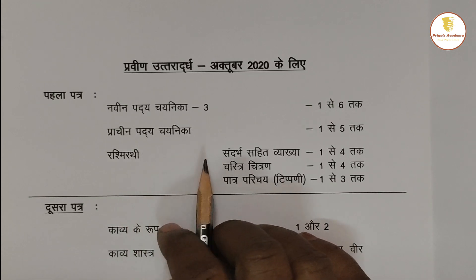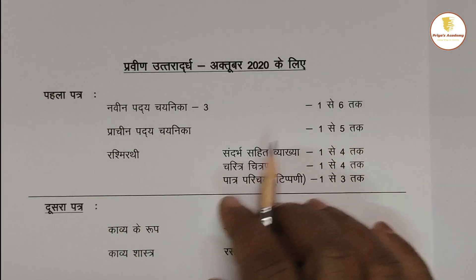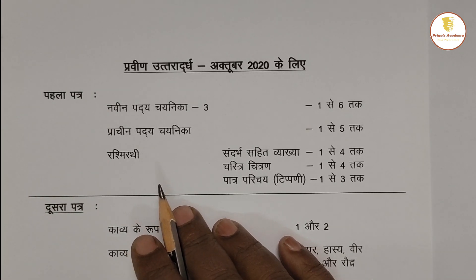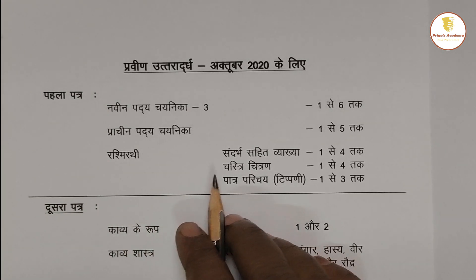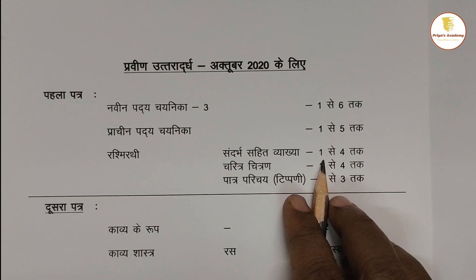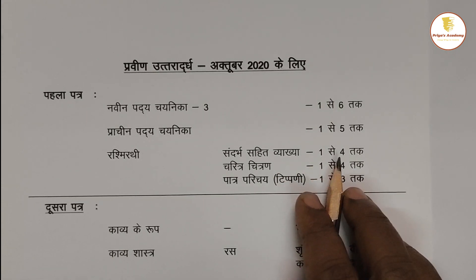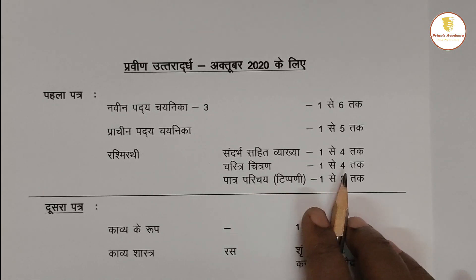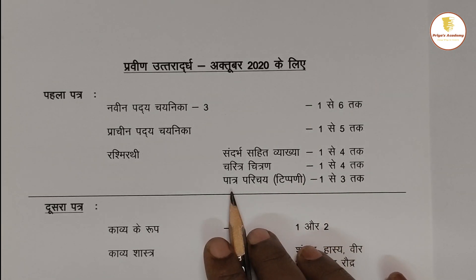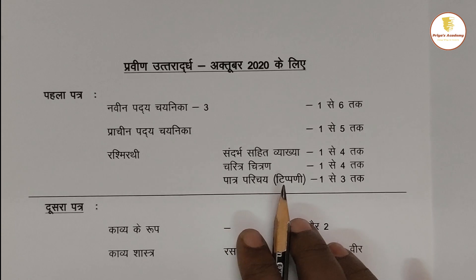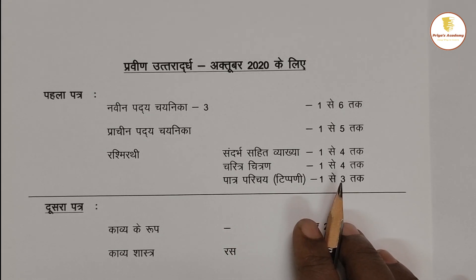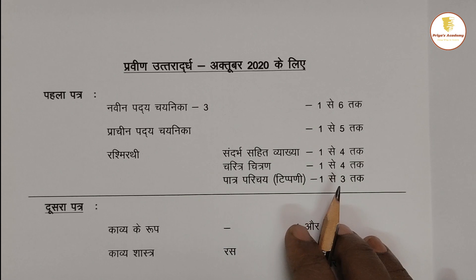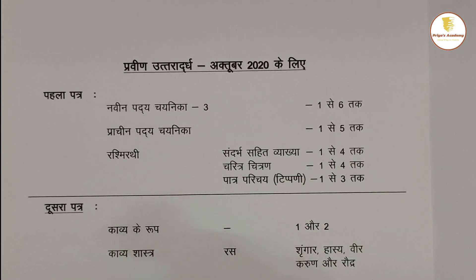Next, Prachi Padhyay Chaynika — here is 1 to 5. Here is Rashmi Rathi, Mahabharat. In Mahabharat, there is ERC. If you study ERC, you can study 1 to 4. Then, Charitra is 1 to 4. The main characters are 1 to 4. Then you can study 1 to 3. You can study this in the guide and then study the question paper.